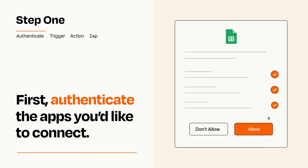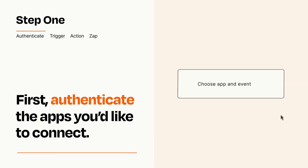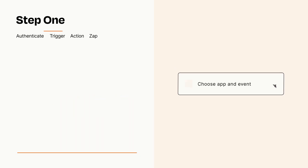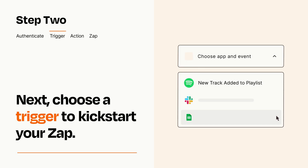Zapier meets industry standards for encryption when connecting with each of your apps. Now let's set up your trigger, which is the event that starts your Zap. Pick the trigger event that you want from the list.